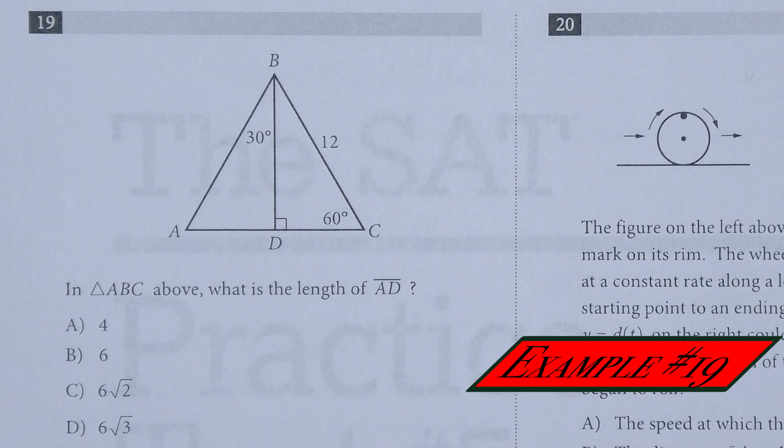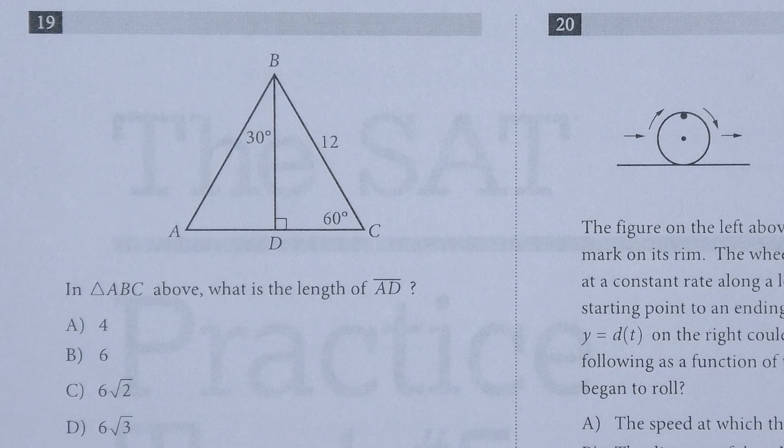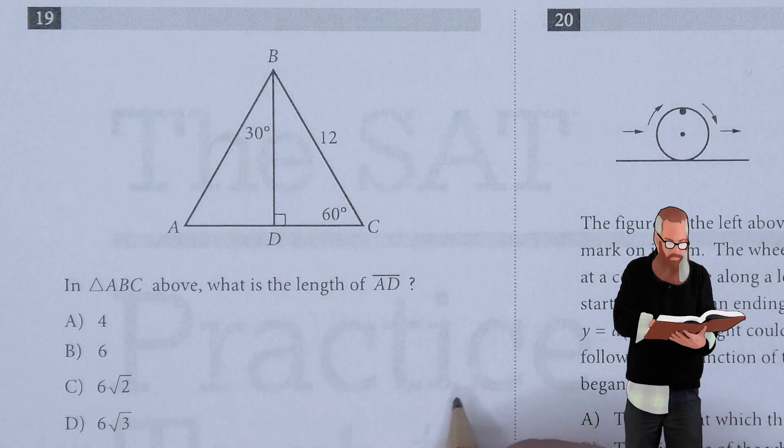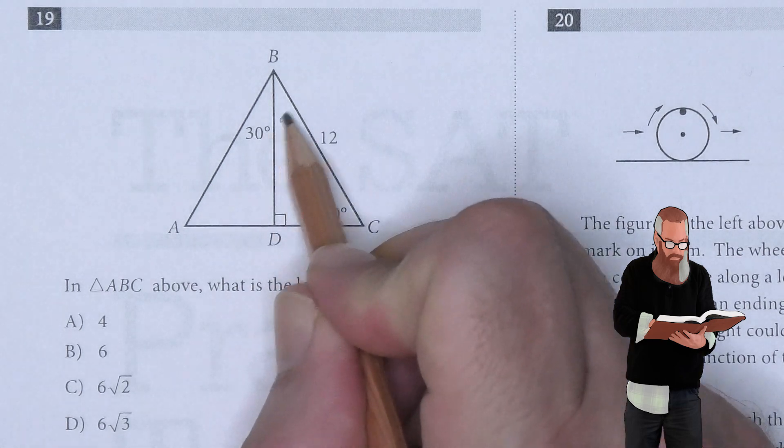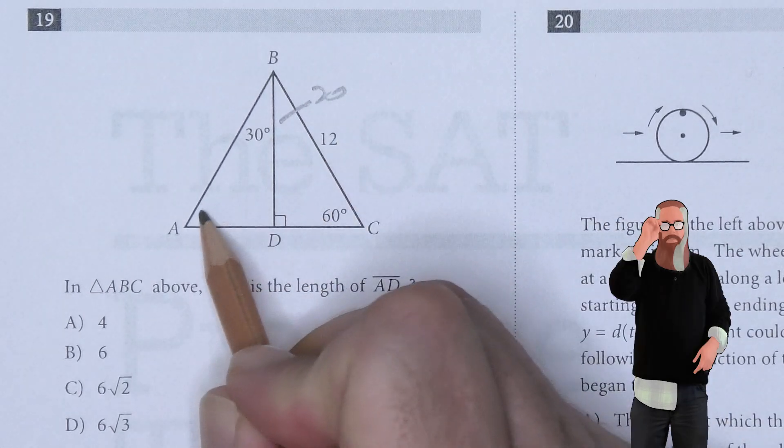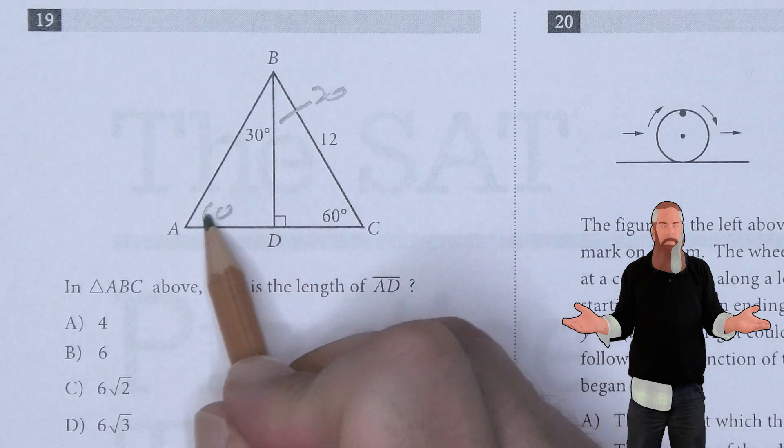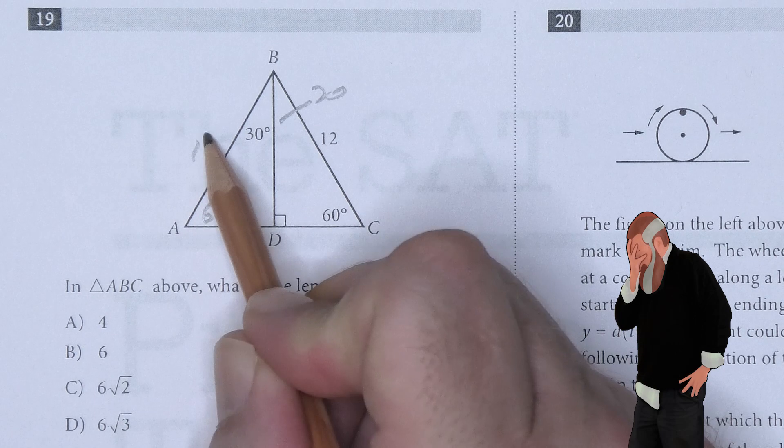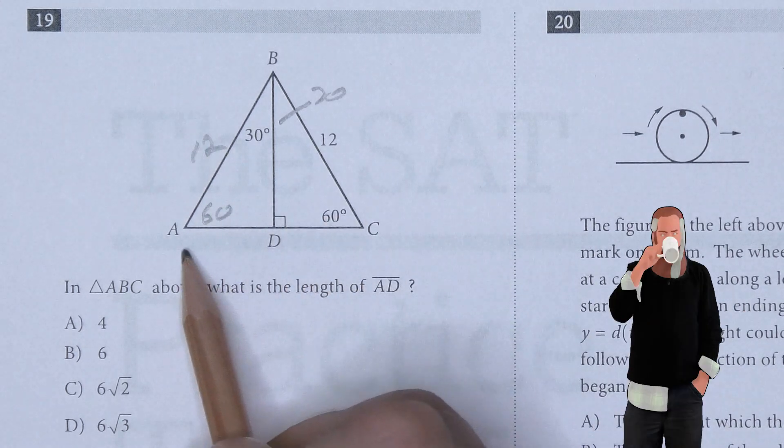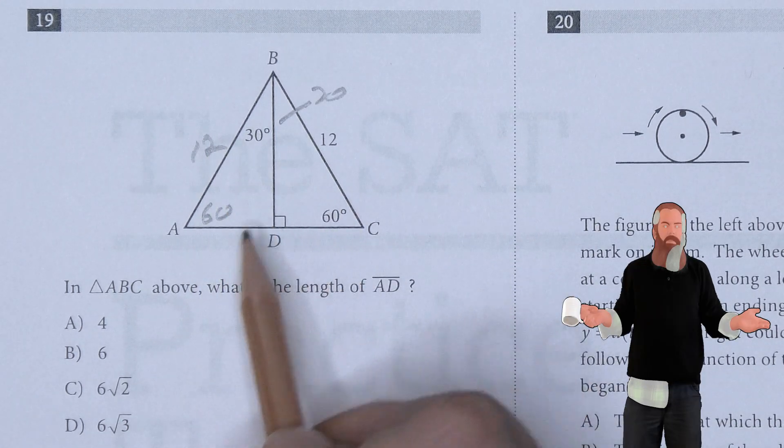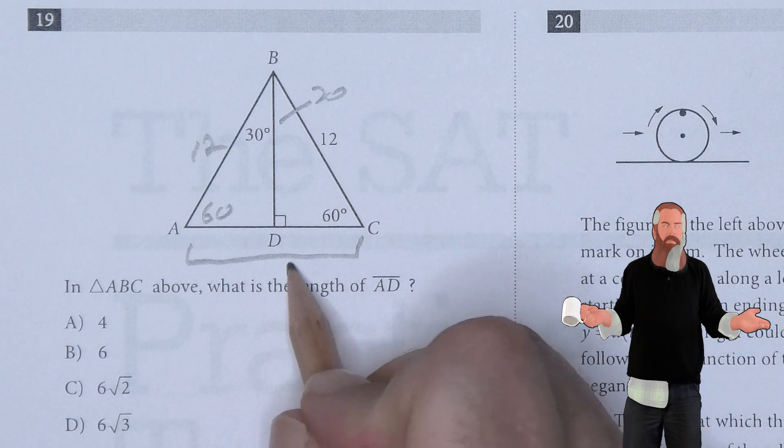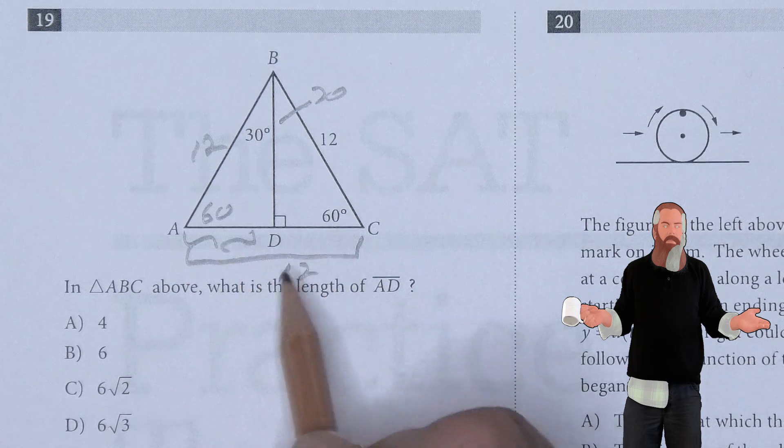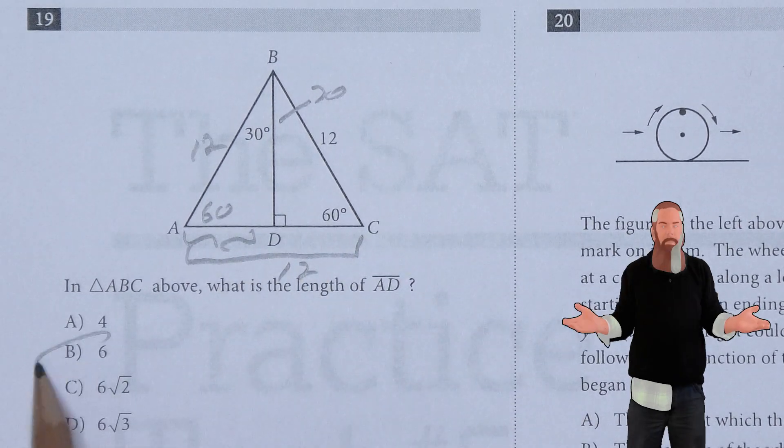In triangle ABC above, what is the length of AD? We can start by filling in information we know. This is 30. This angle is 30. This angle is 60. If I look at this whole triangle, I also know this side is 12. This means it's an equilateral triangle, meaning AC must also be 12. But I only want AD, which is half of 12, or 6.